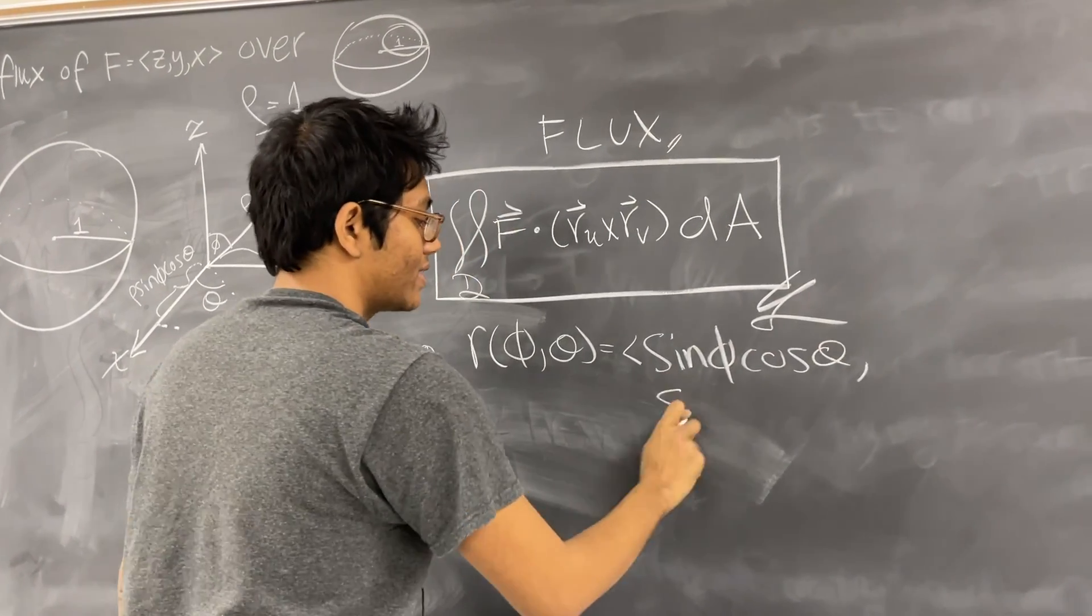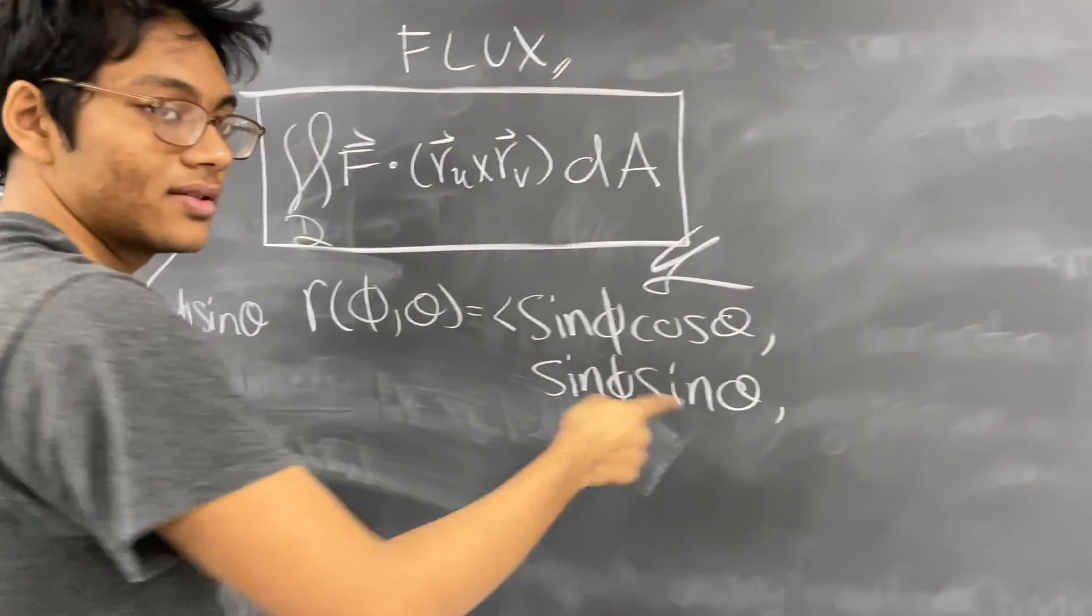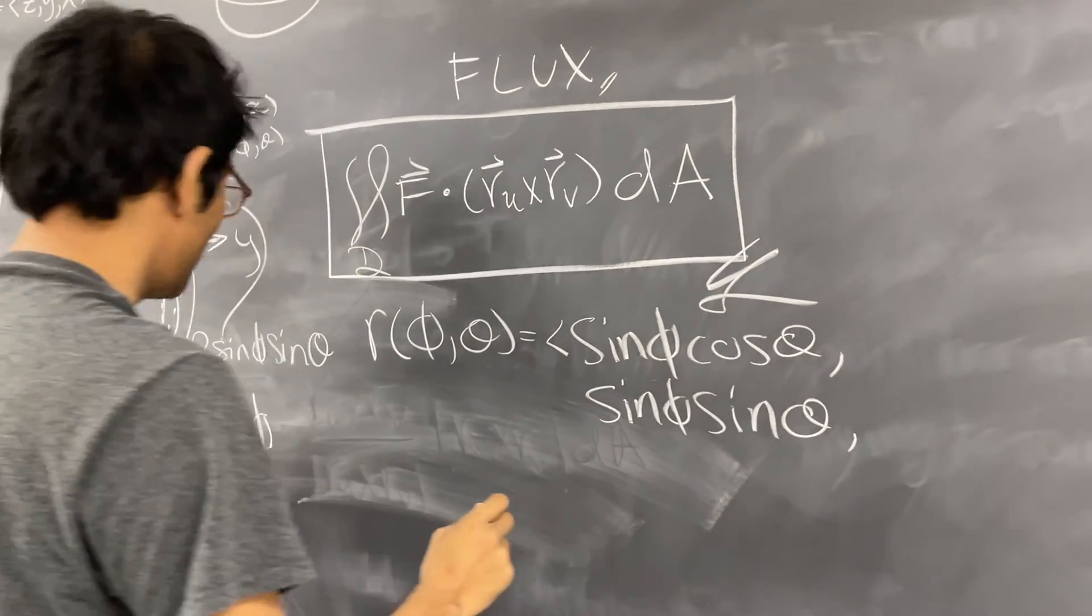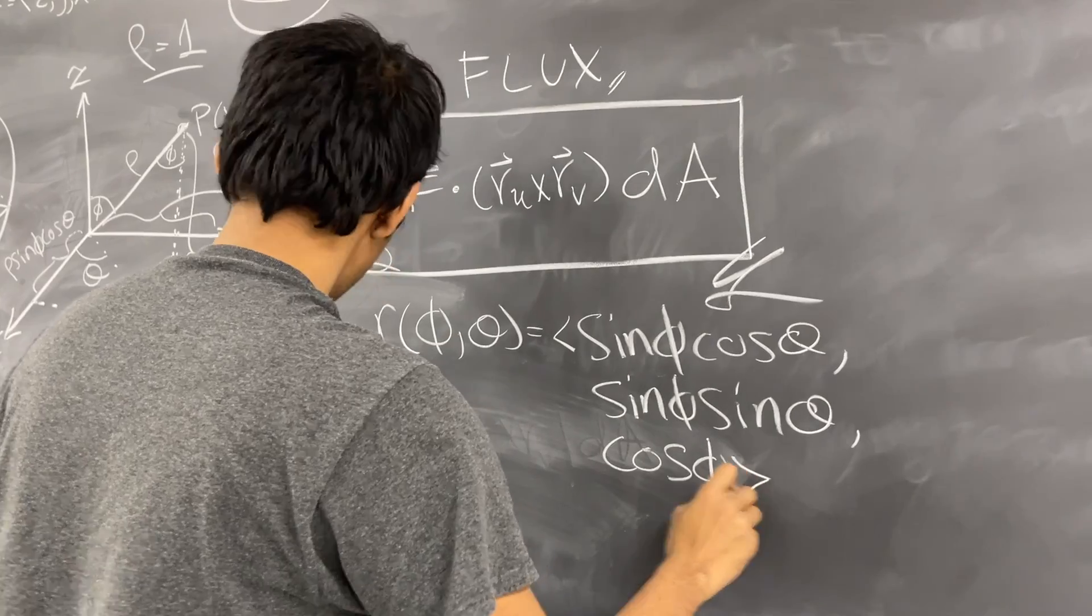For Y we have the same thing, except you have sine of theta, right? Almost like polar coordinates, but in 3D. And for your Z coordinate, you have cosine of phi.